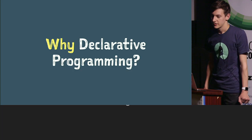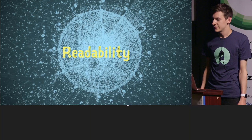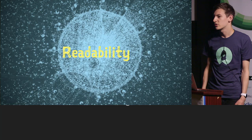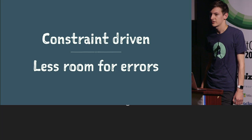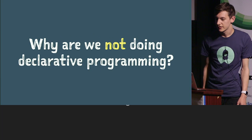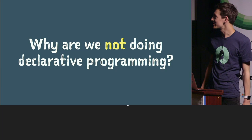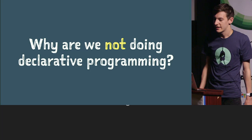So why would we do declarative programming? Well, declarative programming allows us to write clearer code. It's far more readable and it's often easier for new developers to jump into, because there's less implementation details — we're not describing how to solve a problem but instead what we're trying to solve. It's also often constraint-driven, so there's less room for errors or developer mistakes, because we only let a developer write code in a certain way. Why are we not doing declarative programming? I'm not entirely sure, but I think quite often we're not really taught this way, and perhaps it's not always practical.